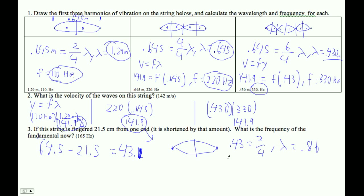And then we know that V is F lambda, right? So the frequency is going to be V divided by lambda. So the frequency is 141.9 divided by 0.86, 141.9 divided by 0.86 is 165 hertz.